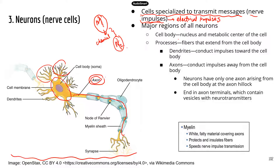Because the electrical signal can only be transmitted within each neuron cell. In between them, that's a watery environment — a fluid — so the electrical signal cannot go through it. So the electrical signal will be translated to a chemical signal, and once the chemical signal gets to the second neuron, it will be converted back to electrical signal again.